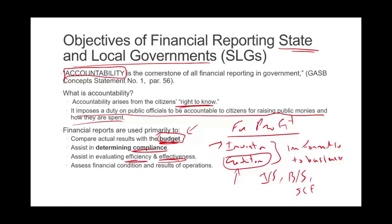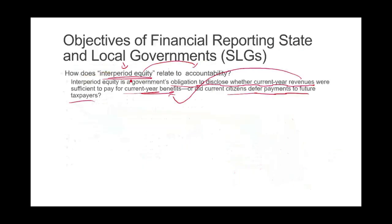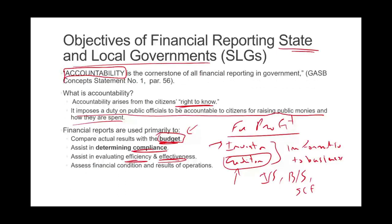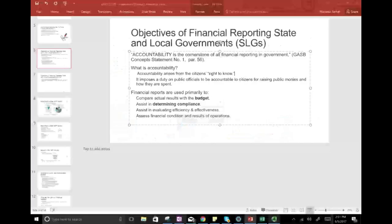This is the objective of financial reporting. Don't forget there's a relationship between inter-period equity and accountability. The financial report will show us if inter-period equity was achieved: whether we raised enough revenue to meet our expenditure for the current year and did not shift any burden to future generations or future taxpayers. If you have any questions, email me. Read your textbook. The objective of financial reporting for state and local government is important for your course as well as your CPA exam. Good luck.